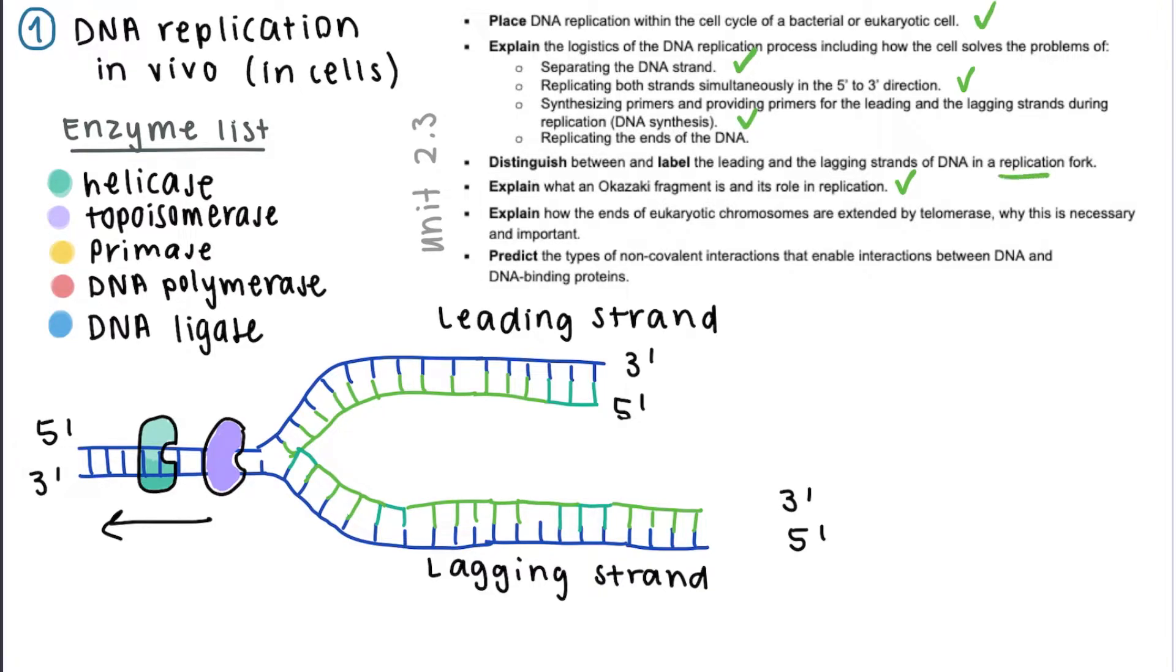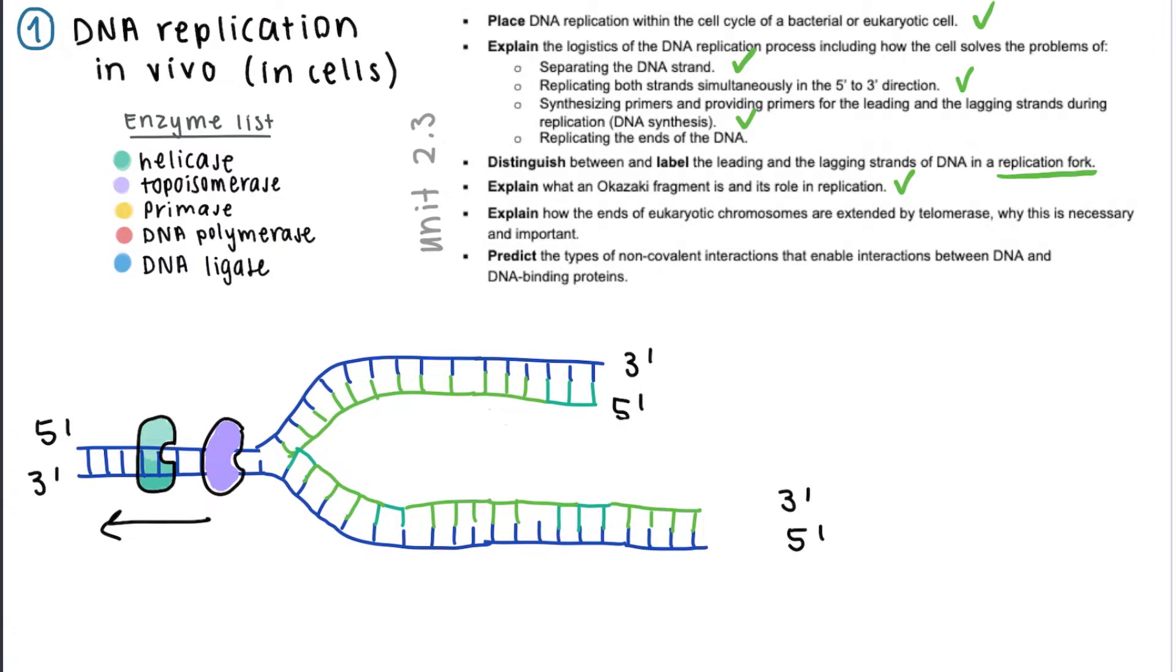Now we're going to talk about this concept of the replication fork, which is basically the kind of horizontal Y shape that is formed when helicase unwinds the double helix.